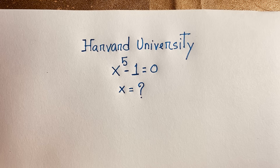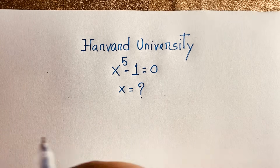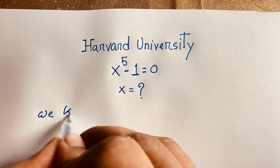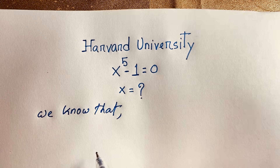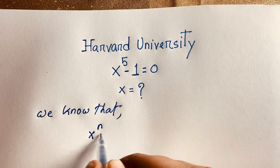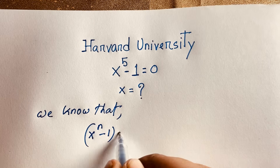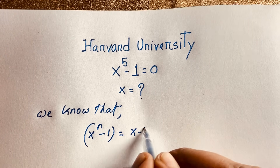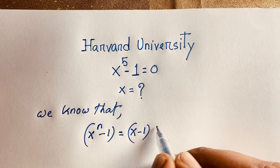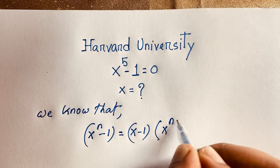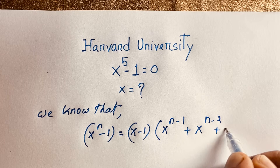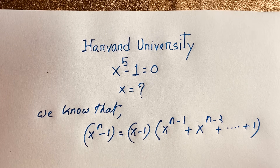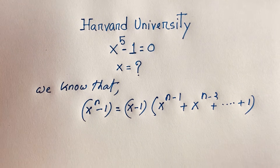First of all, we know that x to the power n minus 1 equals x minus 1 times x to the power n minus 1 plus x to the power n minus 2 plus dot dot dot plus 1. We know this identity.